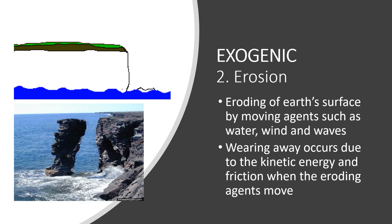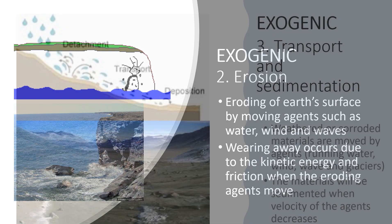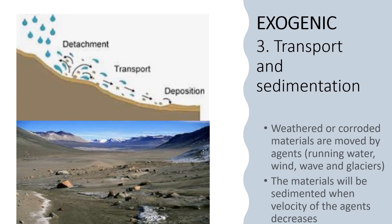Another example of exogenic process is transport and sedimentation. Weathered or eroded materials are moved by agents such as running water, wind, waves, and glaciers. These materials will be sedimented when the velocity of the agents decreases.